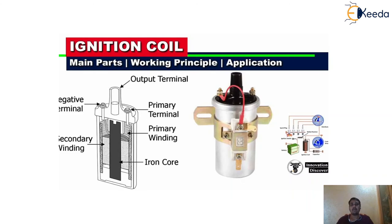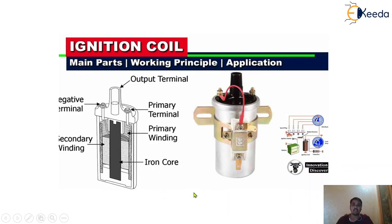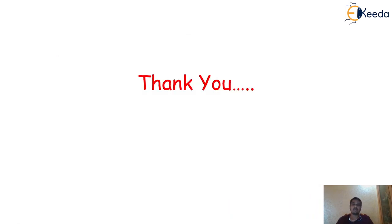This is something about the ignition coil. This particular diagram is the actual ignition coil which looks like this. The ignition coil size varies according to the size and requirement of the engine. Externally it looks like this, and its construction includes the primary winding and the secondary winding along with one centrally placed iron core. I hope you understood the working as well as the construction details of the ignition coil. Thank you so much for watching this video.